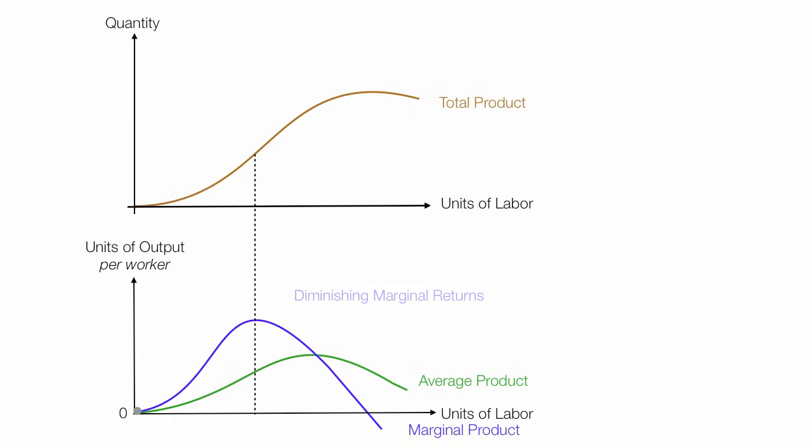Again, total product, I should say quantity is a function of labor and capital where I fixed capital. And so it is quantity is a function of labor. Often in your textbooks, you'll see this labeled as TP or total product, TPL actually. You'll see AP representing average product, APL, and MPL representing marginal product of labor.